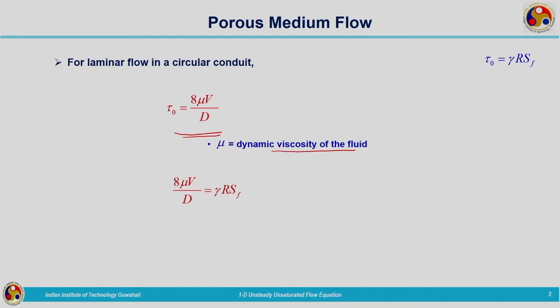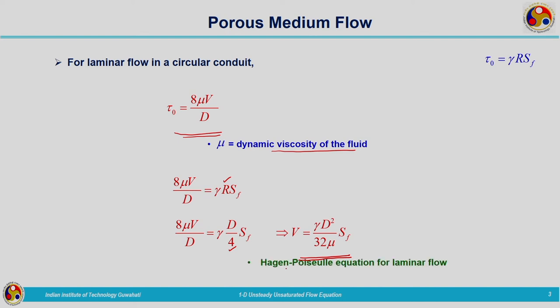We are having two expressions for wall shear stress — one from the previous slide and the other based on laminar flow criteria. These two can be equated, and substituting R as D by 4, we get an expression for velocity of flow as gamma D squared divided by 32 mu Sf. This expression is termed the Hagen-Poiseuille equation for laminar flow. These same concepts we are going to make use of in the case of flow through porous media.